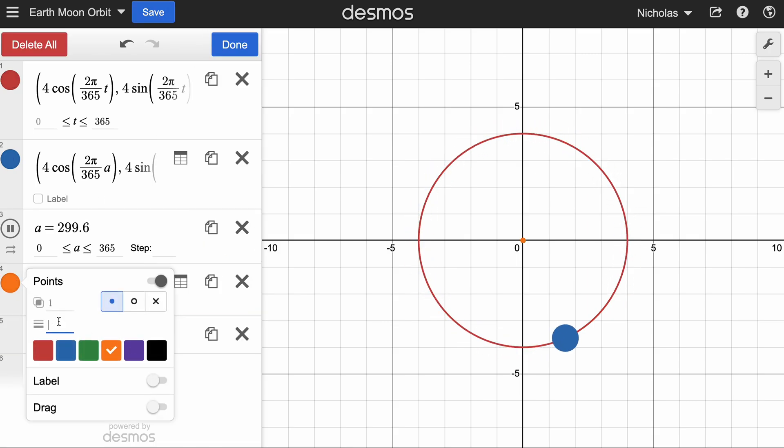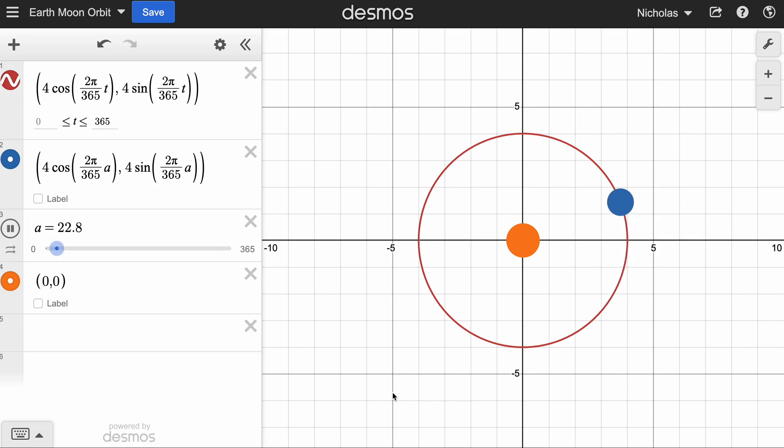Maybe I ought to have a point, the Sun at 0, 0. Purple Sun. Well, and the Sun's much bigger than the Earth. It's too big for this demonstration. Good enough. Okay, so there's the Sun. Earth's going around the Sun.